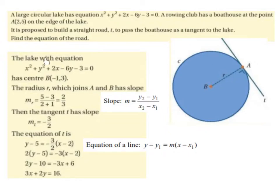The lake has the equation x squared plus y squared plus 2x minus 6y minus 3 equals 0. And it has a centre of (-1,3). So what we do is take the coefficient of x, which is 2. We half it, which is 1, and change the sign to get minus 1 for our x value.